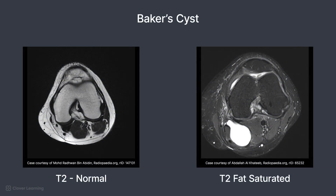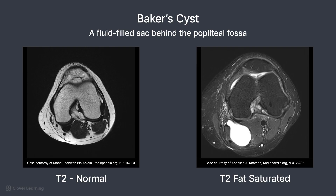A Baker cyst, also known as a popliteal cyst, is a fluid-filled sac that forms in the popliteal fossa, the area behind the knee joint. The cyst develops due to an accumulation of synovial fluid, often as a result of an underlying knee joint condition that causes excess fluid production or leakage. On MRI, they appear as a well-defined high-signal fluid-filled sac in the popliteal fossa on T2-weighted images. These are often used with a fat-saturation imaging option. Contrast media is typically not needed for this pathology.